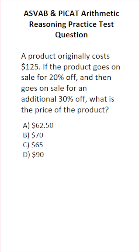This arithmetic reasoning practice test question for the ASVAB and PyCat says a product originally cost $125. If the product goes on sale for 20% off and then goes on sale for an additional 30% off, what is the price of the product?